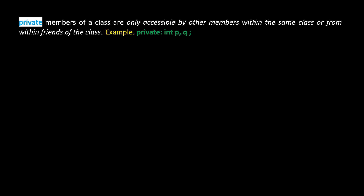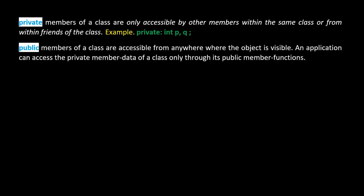Private members of a class are only accessible by other members within the same class or from within friends of the class. For example, 'private: int p, q;' is a declaration that p and q are integer variables with the highest category of security level, where they can be accessed only by other members of the same class or by friends of this class. We will learn more about friends of a class in upcoming video sessions.